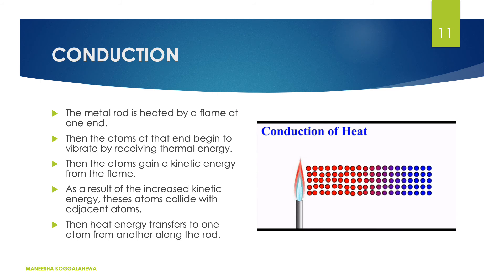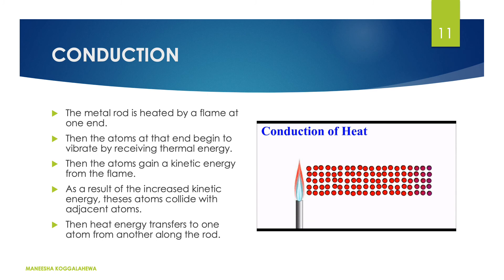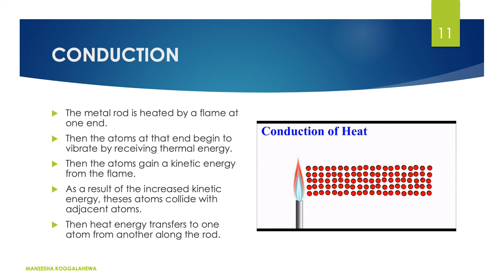Let's look at the diagram showing the mechanism of conduction of heat. The metal rod is heated by a flame at one end. The atoms at that end begin to vibrate by receiving thermal energy, and they gain kinetic energy from the flame. As a result, these atoms collide with adjacent atoms, and heat energy transfers from one end to the other along the rod. That is the mechanism of conduction of heat.